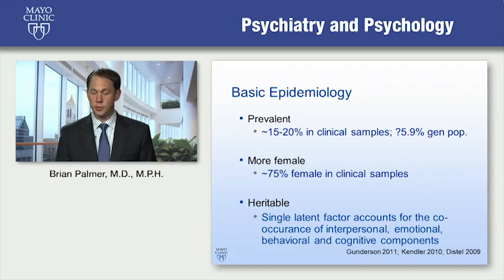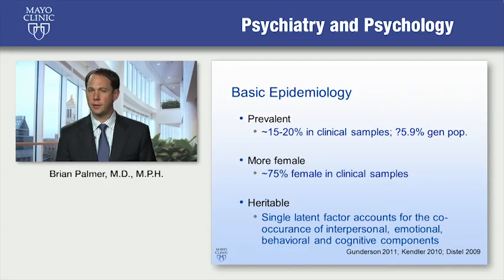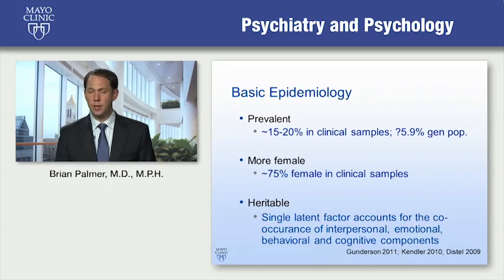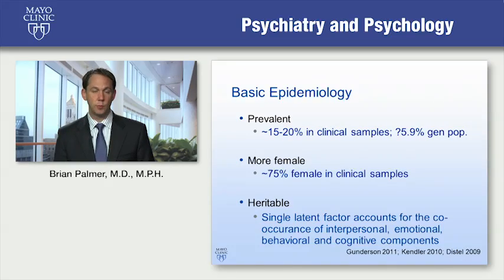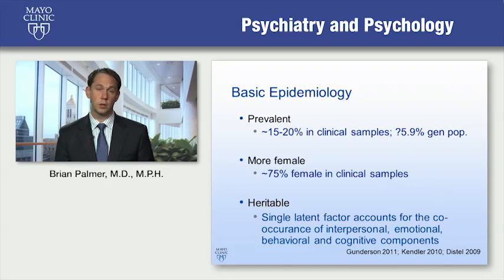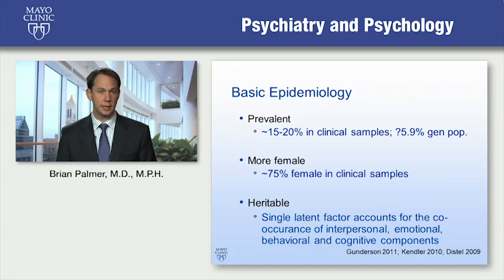Borderline is common in the population: 15 to 20 percent of clinical samples in psychiatric practice, and approximately 5.9 percent in the general population — from the largest door-to-door study, the National Epidemiologic Survey on Alcohol and Related Conditions, though it hasn't been seen as quite that high in other samples. It's more female in clinical samples, although the gender breakdown is more balanced in community samples. It is highly heritable, and a single latent factor most likely accounts for the co-occurrence of all four phenotype groupings, supported by two twin studies and one family study.